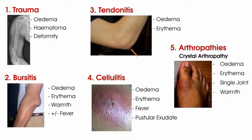Crystal arthropathies represent a group of conditions associated with deposition of mineralised material mimicking crystals within joints and surrounding tissues. Gout and pseudogout are some of the most recognisable forms. These typically present in a single large joint with redness, swelling, and warmth on palpation. As with rheumatoid arthritis, consider whether the onset can be linked to a mechanical cause. If not, a crystal arthropathy should be considered and the patient should consult their GP for further investigation.